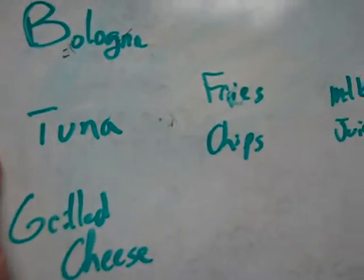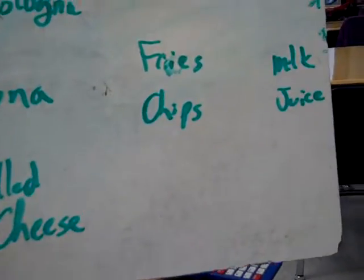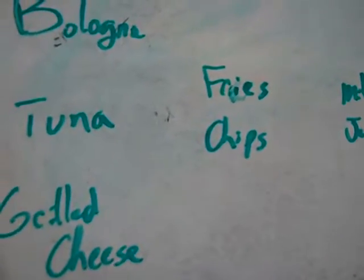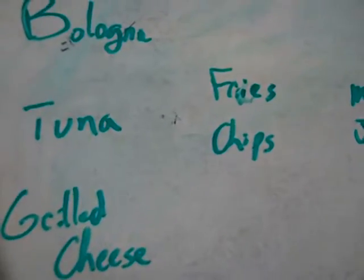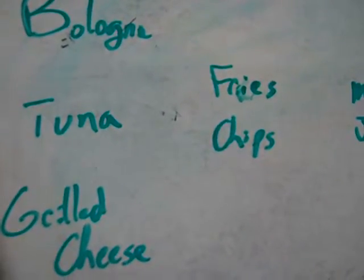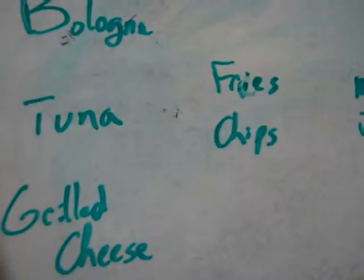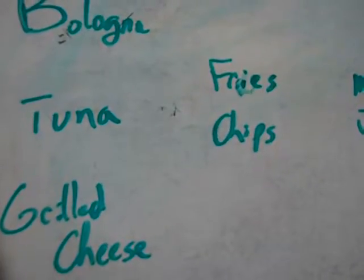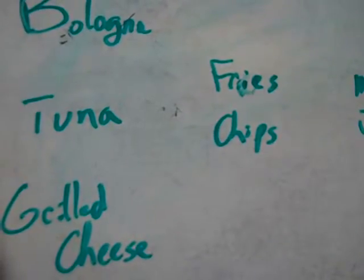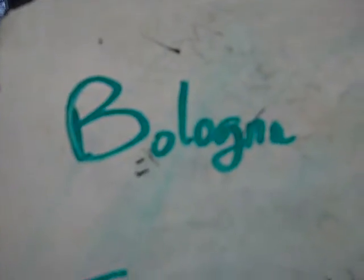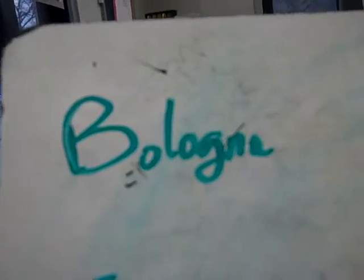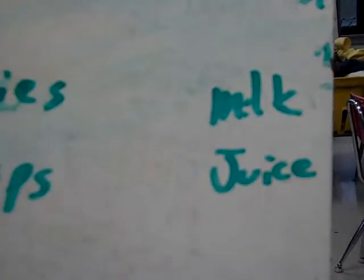Are you going to start explaining, Jared? Jordan can have a bologna sandwich with fries or potato chips, or milk and juice, or tuna. How many combinations of the bologna thing can he have? He can have French fries, potato chips, milk, or juice.